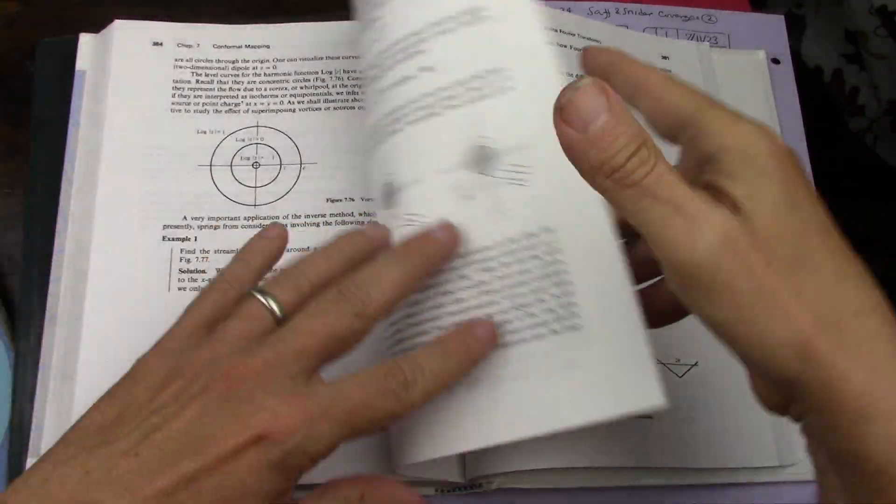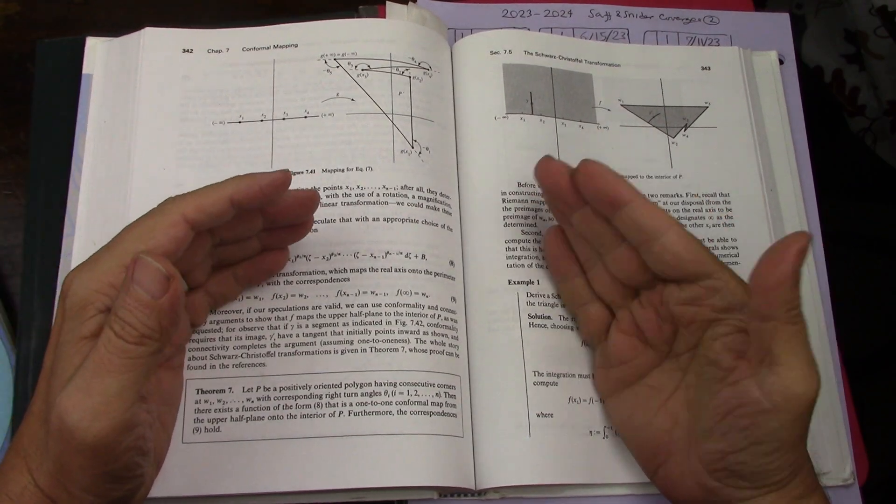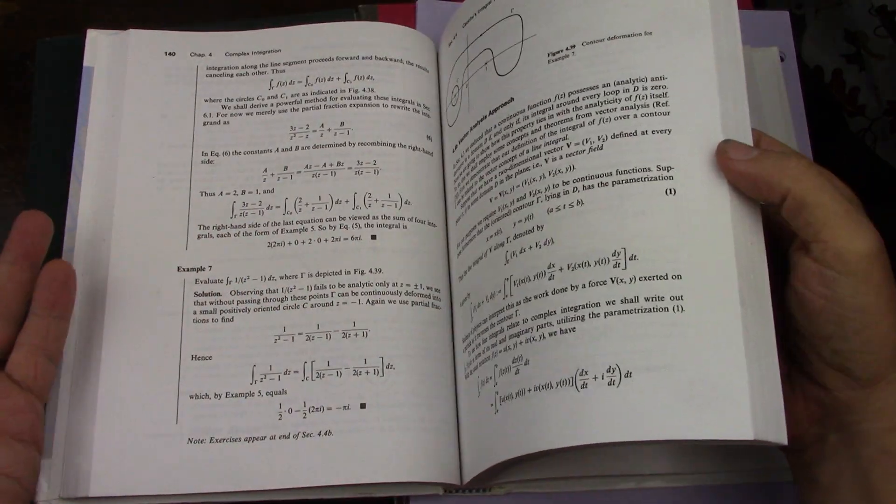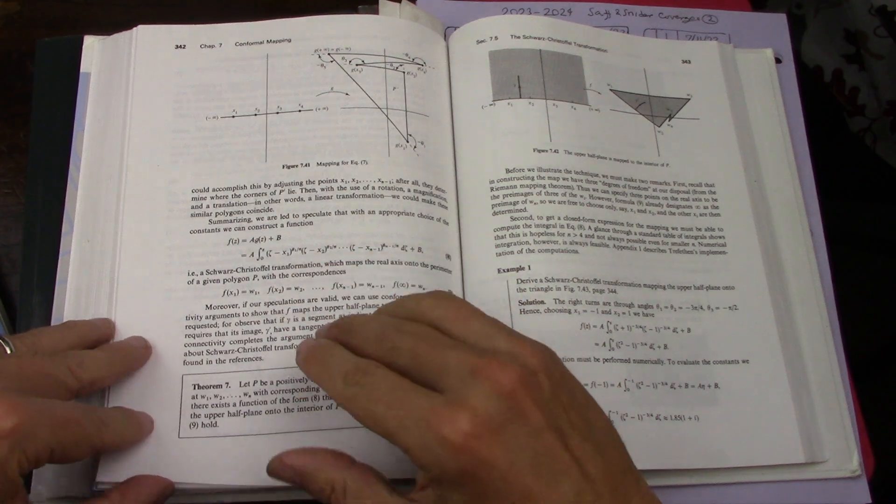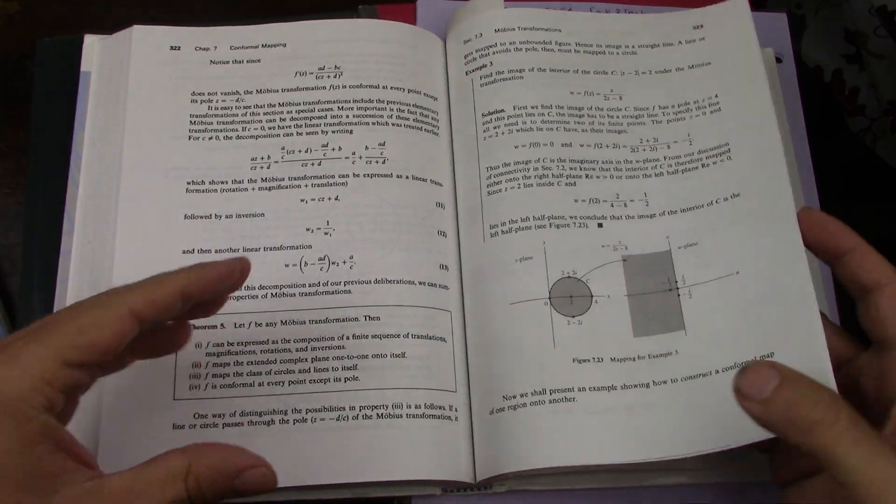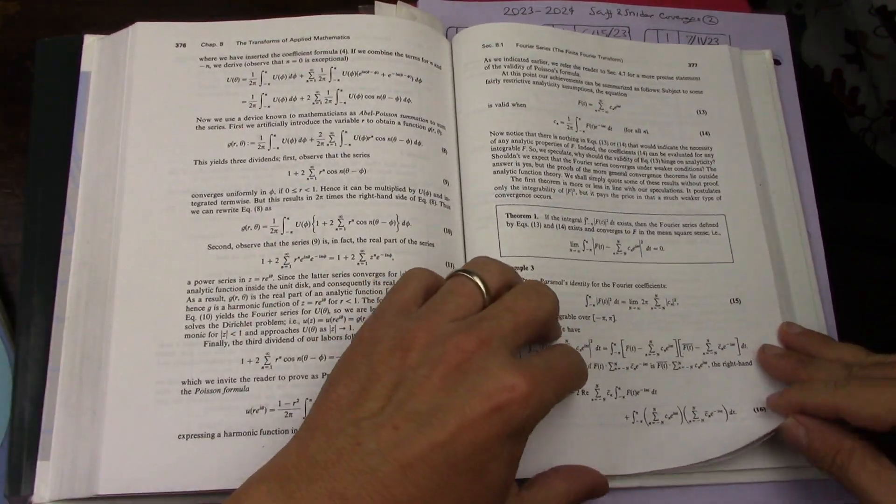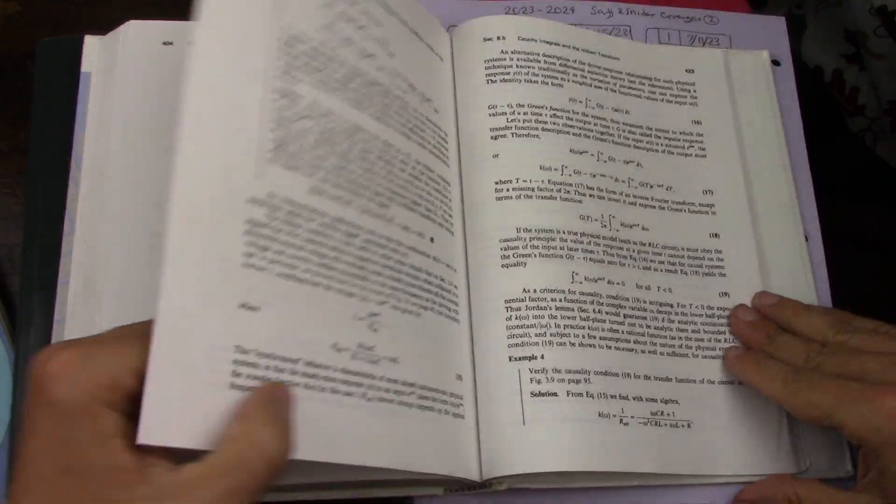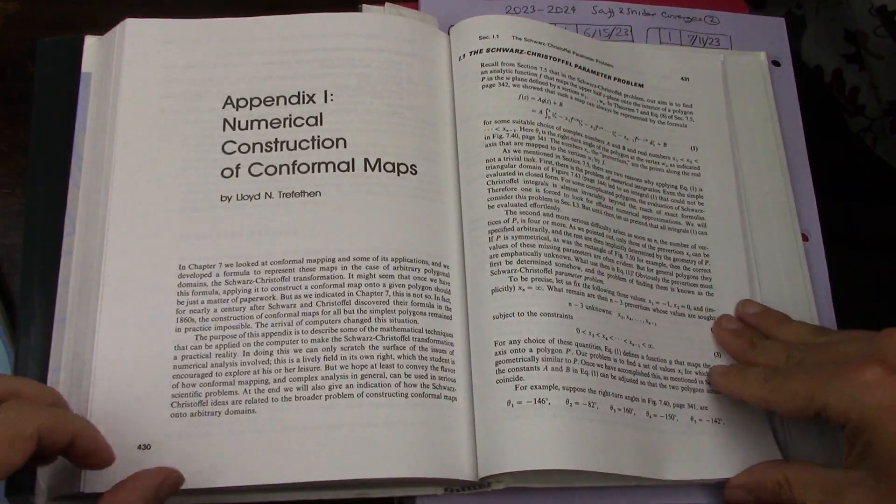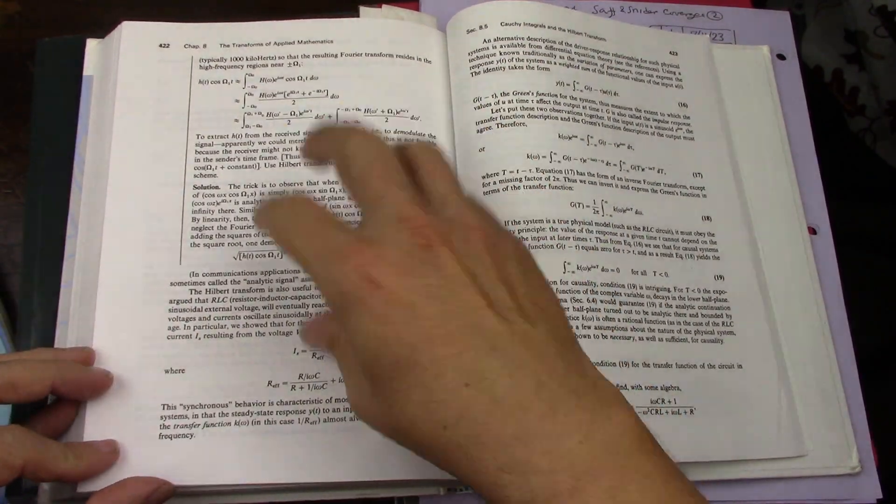So chapter 7 with conformal mapping really put it together for me. Made me understand really what the book was all about and I've started doing work problems in chapter 7 but I want to do a few more and the transforms chapter, Fourier transforms, Laplace, Z transforms even Hilbert transform, very interesting and I want to do some problems as well.